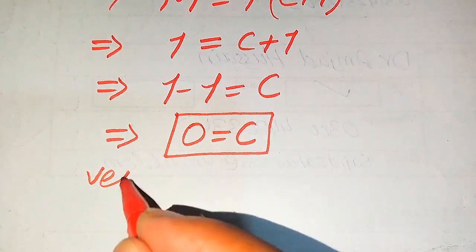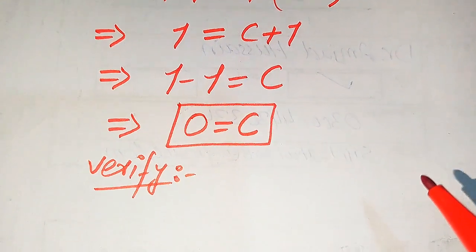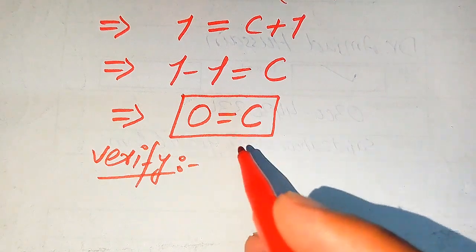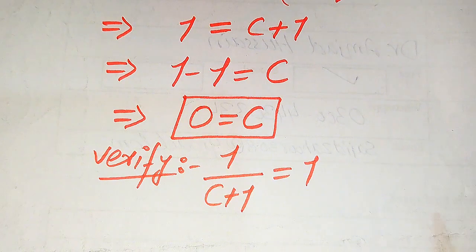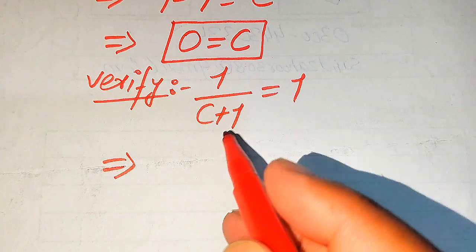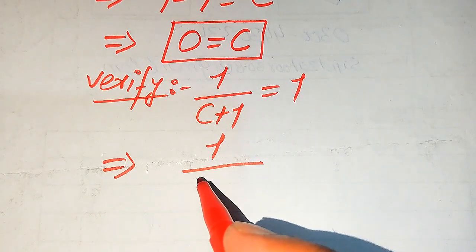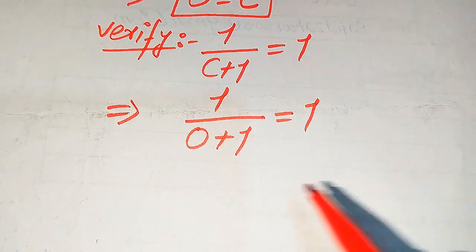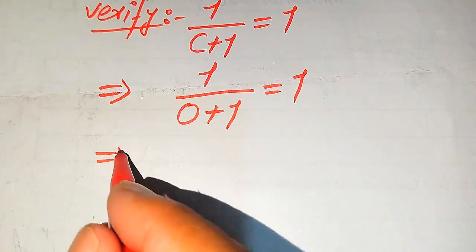In the next step we verify whether this root satisfies our given equation or not, so we can decide if it is a solution or an extraneous root. We copy the given equation: 1 divided by c plus 1 equals 1. We substitute c equals 0 into the left hand side, giving us 1 divided by 0 plus 1 equals 1.